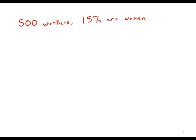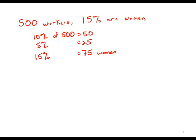So here we have to change percents to actual counts to find out the exact number of individuals. So we have 500 workers. 10% of 500 of course would be 50. 5% would be half of that, 25. And of course 15%, that's just 5% plus 10%, 75. So right now we know there's 75 women hired in this factory.